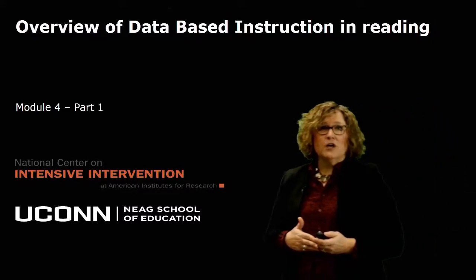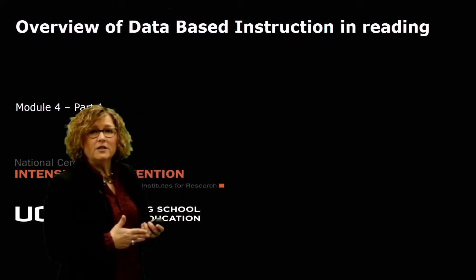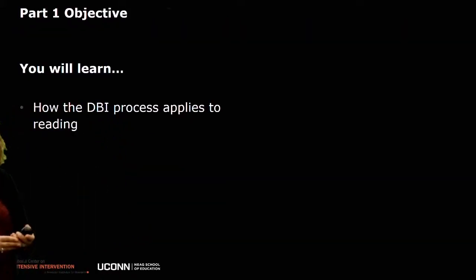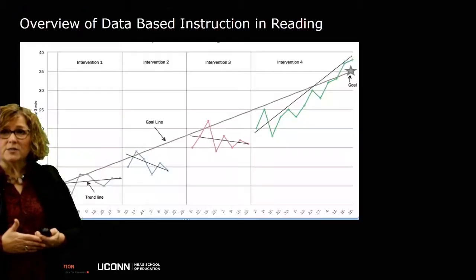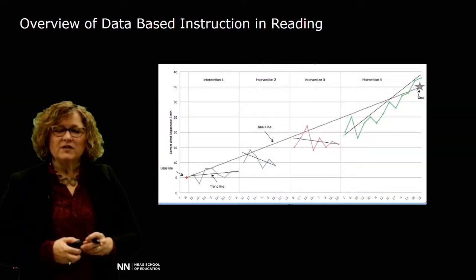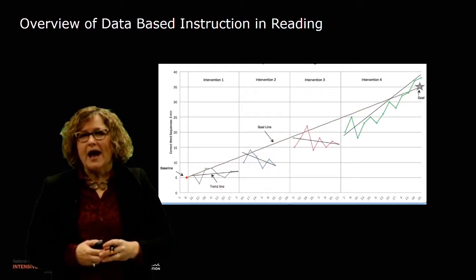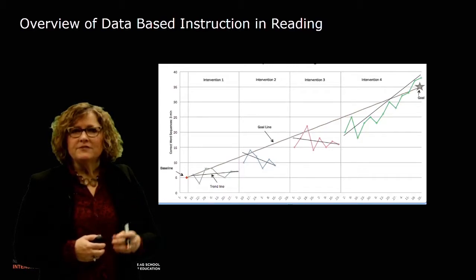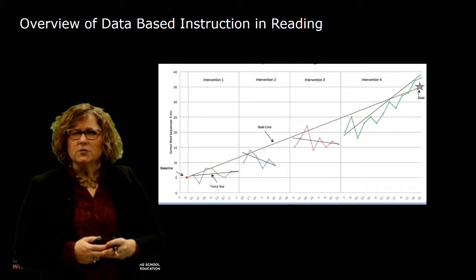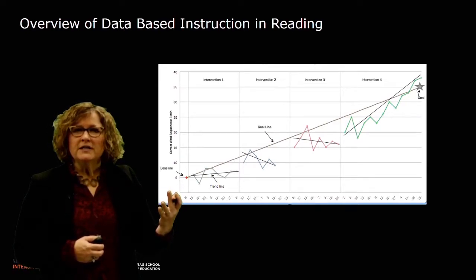We're going to first talk about an overview of DBI, or data-based instruction in reading. In this first part, we're going to talk about how this DBI process applies to reading. Here's an example of graph data that a teacher collected. These graphs of performance and progress are really important because they create a nice picture that really demonstrates how the student is doing.